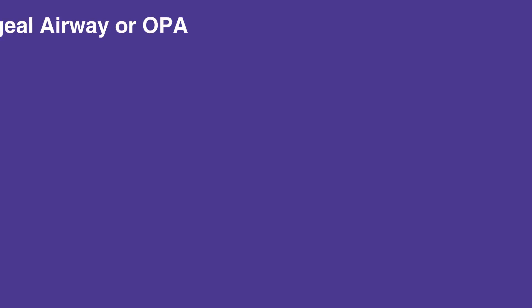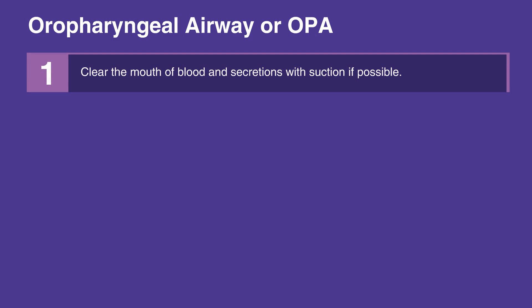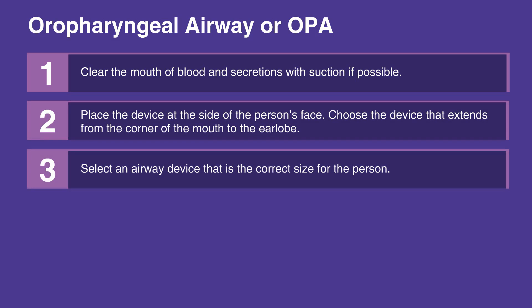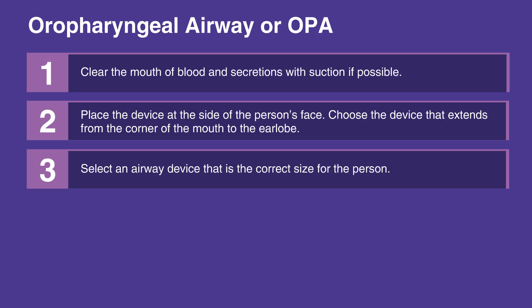To insert an oropharyngeal airway, or OPA, first clear the mouth of blood and secretions with suction if possible. Place the device at the side of the individual's face, and make sure to choose a device that extends from the corner of the mouth to the earlobe. Insert the device into the mouth so the point is toward the roof of the mouth or parallel to the teeth.